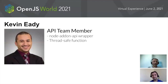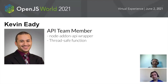I am Kevin Eady. I'm an API team member, primarily working on the Node add-on API wrapper. We'll talk about that shortly. I'm focusing mainly on thread-safe functions and asynchronous programming in general.